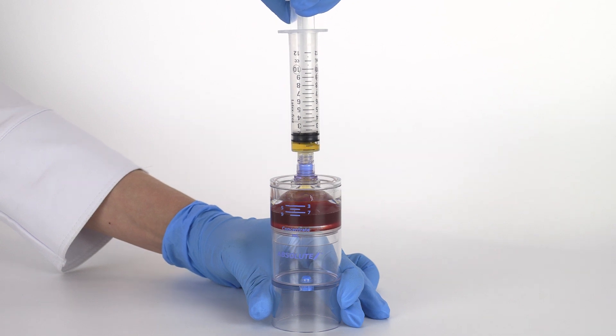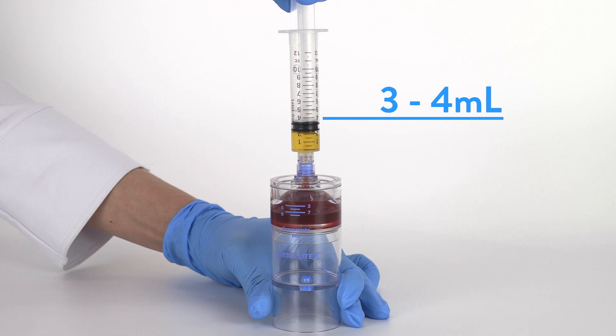Attach the 12-milliliter syringe to the needleless port and aspirate 3 milliliters or the desired amount of platelet-rich plasma.